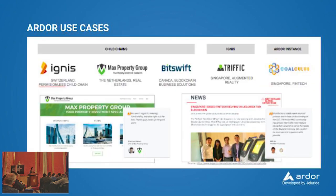These are some of the use cases built on the Ardor platform. Ignis is the open source and permissionless child chain that everybody can use inside the Ardor ecosystem. Max Property Group is a real estate company with more than 20 years of experience. Intrific is a mobile app that uses augmented reality and rewards people walking in the street with GPS tokens. Coculux is an Ardor instance in the fintech sector, also based in Singapore. And we have more projects in development that will see the light this year.